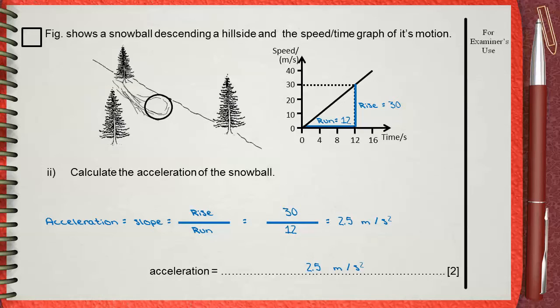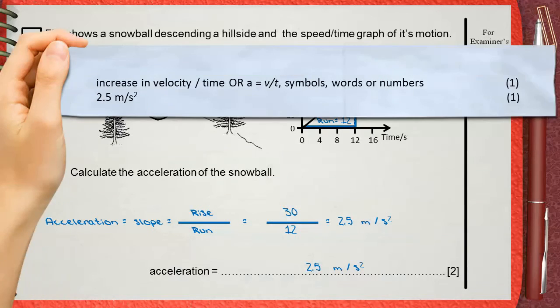There are other ways to get the slope like y2 minus y1 divided by x2 minus x1. We will see this in later questions. The mark scheme gives two marks. The first mark is increase in velocity divided by time, or a equals v minus u over t in symbols, words, or numbers. The final answer, 2.5 meters per second squared, gives the second mark.